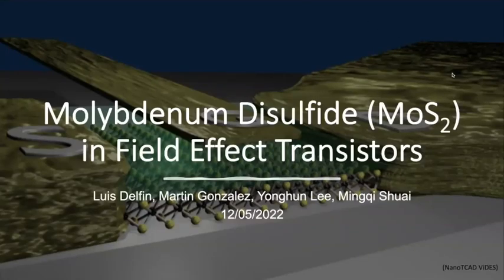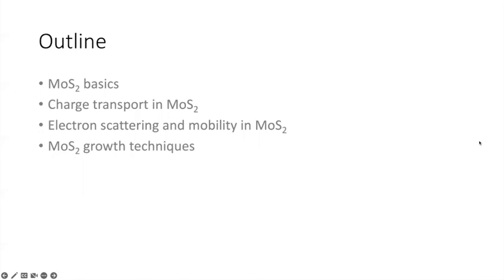Hello, I'm Mingqi, and I'm here with my teammates Luis, Martin, and Yong Hong. In this video, we're going to talk about molybdenum disulfide in field effect transistors, focusing on defects and charge transport. We'll start with a brief introduction of MoS₂, then zoom in to its charge transport models, electron scattering and mobility issues, and end with a discussion on the growth techniques.